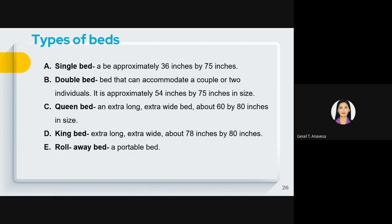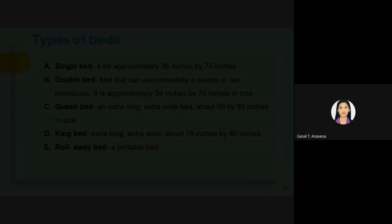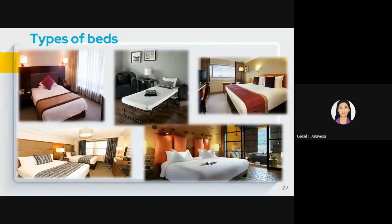Lastly, the rollaway bed is a portable or extra bed. If there is an extra person, the hotel can provide one — most hotels charge around 300 to 1,000 pesos for a rollaway bed. In the slide pictures shown: the first picture is the single bed, the second is the rollaway bed, the third is the queen size, the fourth on the left is the double bed, and the last is the king size.